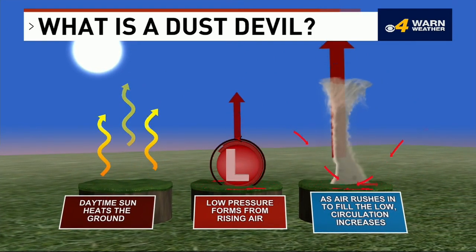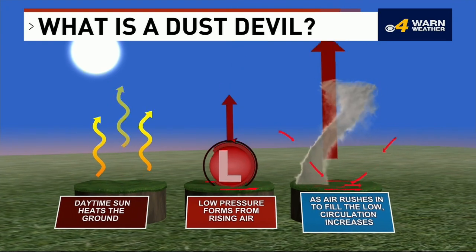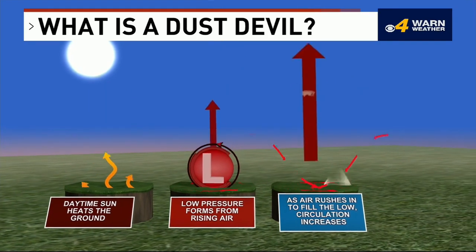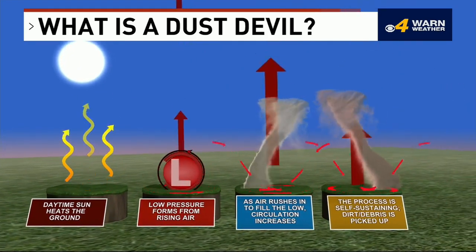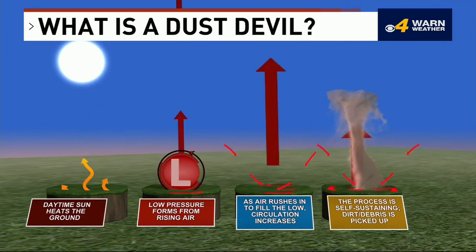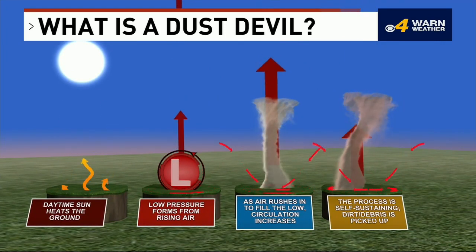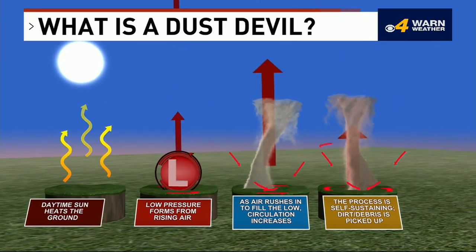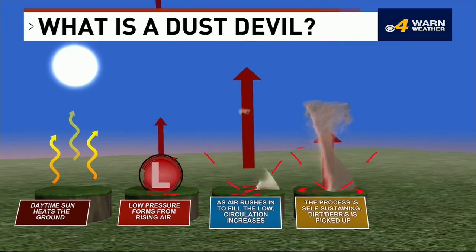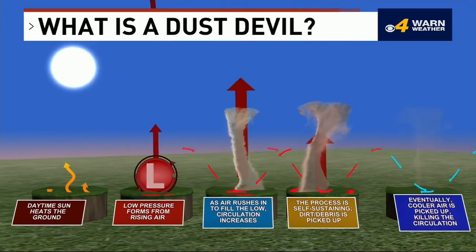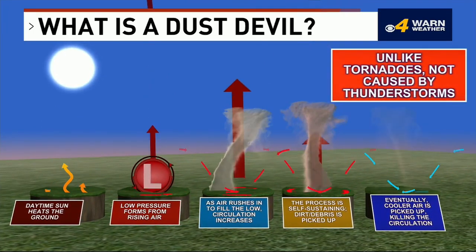This air being brought in causes the circulation to get stronger. This is a self-sustaining process. Air rises, gets replaced by the air rushing into the area of low pressure, and the circulation then gets stronger and stronger, picking up dust and debris, and voila, you have yourself a dust devil.